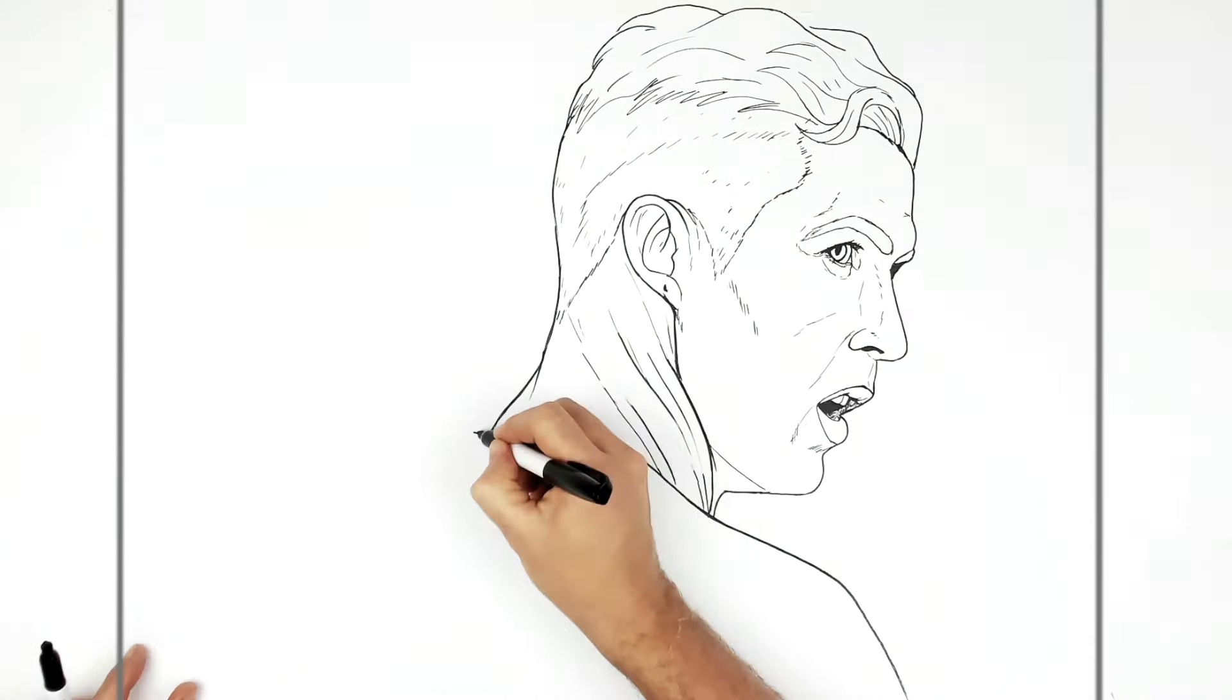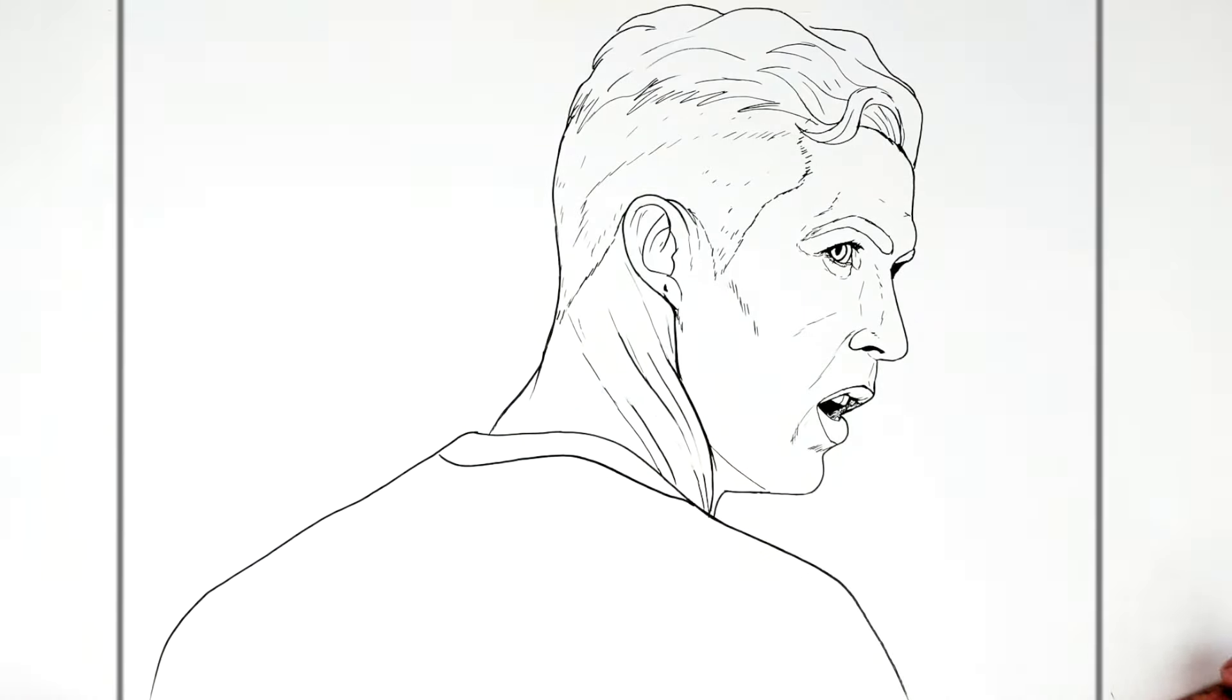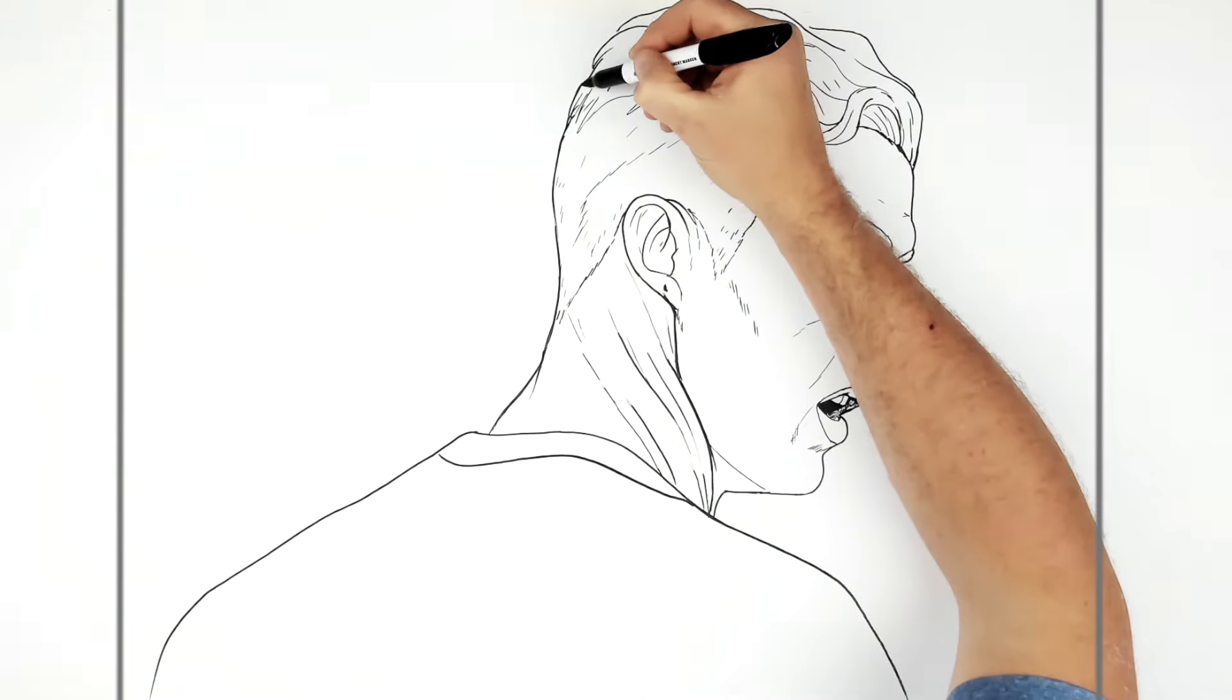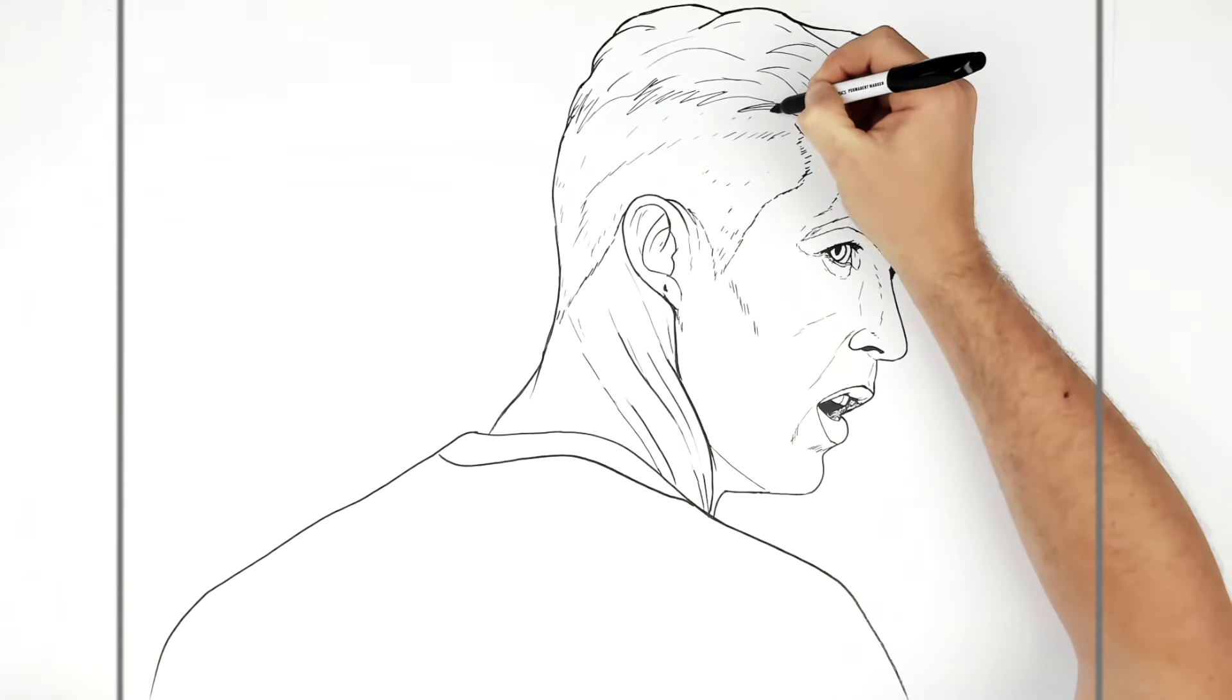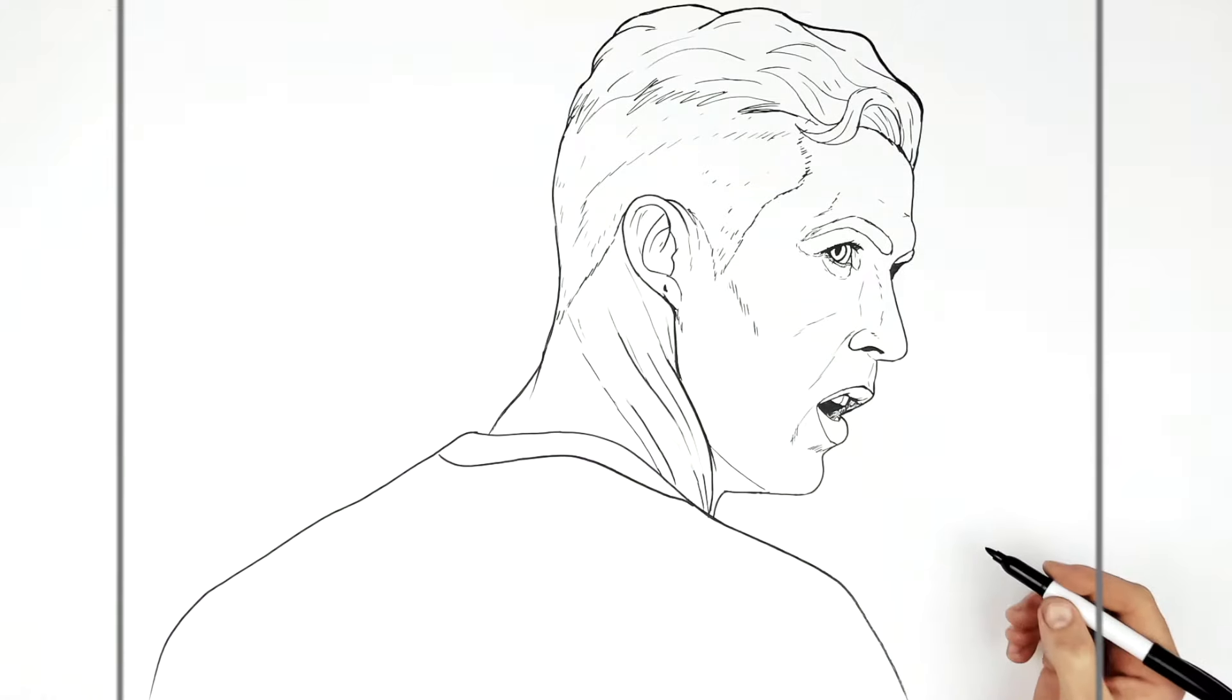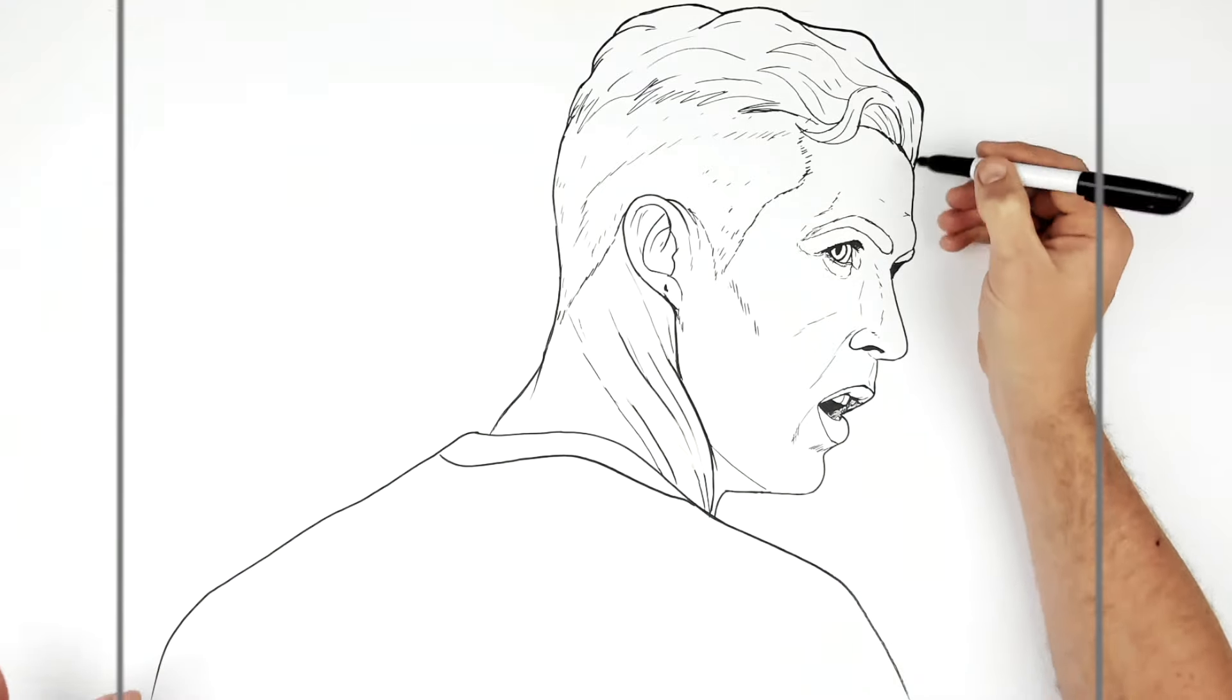So let's do his other shoulder. So it comes down, there's more his back. It comes out down that way. And then we have the white collar. I think this is a United jersey. Just maybe some more textures to his hair. That's like the general shape for them now.